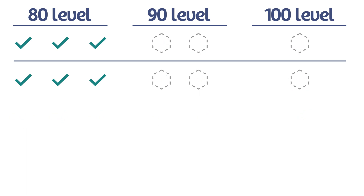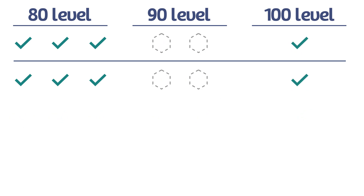It's not uncommon for students to get the 100-level question correct but one or both of the 90-level questions incorrect. In this case, I basically use the 100-level question as a 10-point bonus. So if they miss both 90-level questions, they receive a 90. If they get one 90-level correct along with the 100-level, they receive a 95.